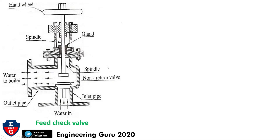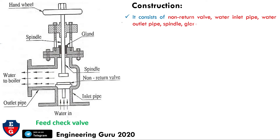Here is the feed check valve schematic diagram. The feed check valve consists of a hand wheel, spindle, gland, non-return valve, inlet pipe, outlet pipe, water in, and water to the boiler. Its construction consists of a non-return valve, water inlet pipe, water outlet pipe, spindle, gland, and hand wheel, as seen in this diagram.